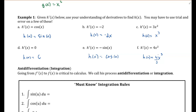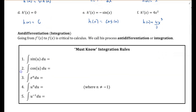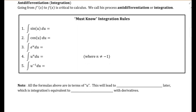So we're going to go ahead and talk about anti-differentiation or integration. Notice these terms are used interchangeably — they are synonyms. And here are just some of the must-know basic integration rules for functions. The integral of sine of u du — we're just using u as our variable here — that is going to be equal to negative cosine of u, and I'm going to add what we call a c value, a constant.